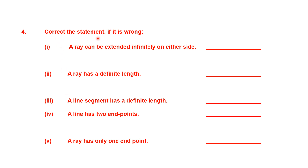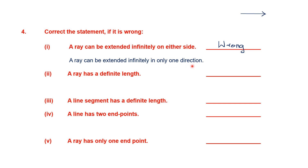Question 4. Correct the statement if it is wrong. First statement: a ray can be extended infinitely on either side. When I draw a ray, there is an arrowhead only on one side; the other side is fixed. The arrowhead means that side can be extended infinitely, but the statement says on either side — meaning both sides — which is wrong. The correct statement is: a ray can be extended infinitely in only one direction.